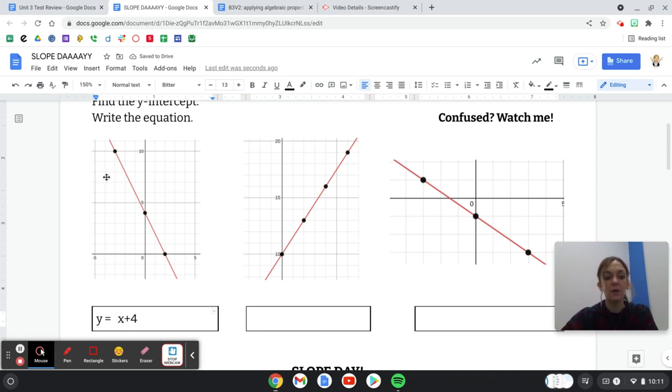Now this graph is going down. If it goes this way, it's going down, it's decreasing, so it's negative. If it goes this way, it's going up, it's increasing, it's positive. So because this is negative, I'm going to put my negative sign so I don't forget it, my negative slope.